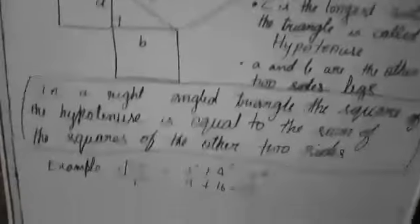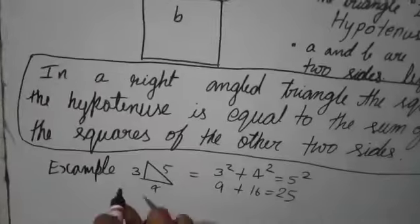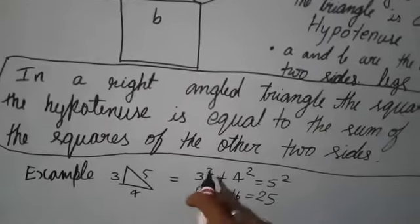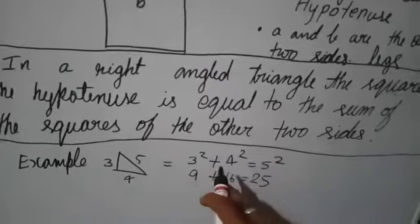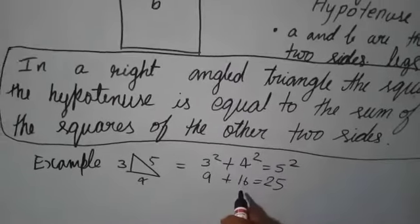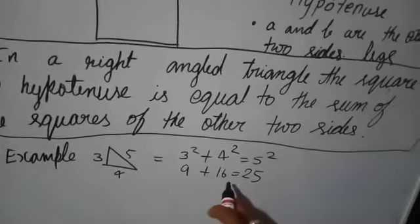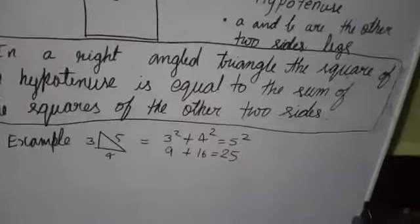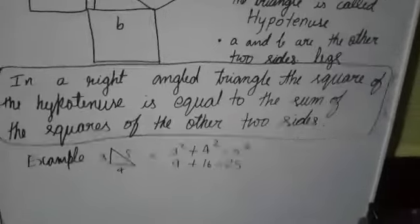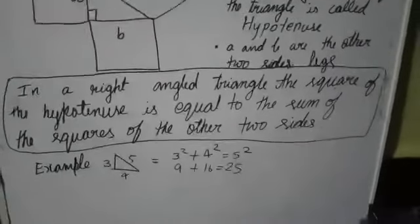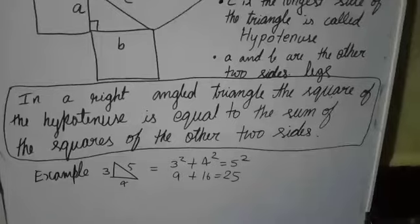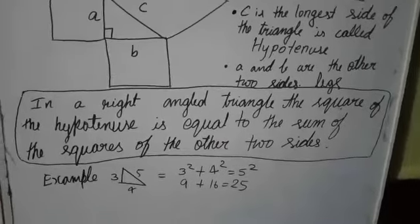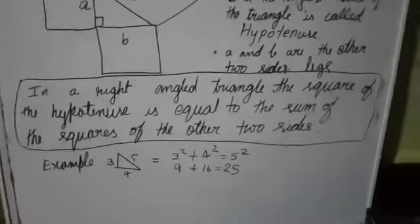For example, we can prove it: here 3 and 4 are the other two sides. If we square them — 3 squared plus 4 squared — 3 squared is 9, 4 squared is 16, and 9 plus 16 equals 25. 25 is the square of 5. So in this way the definition tells you: in a right angle triangle, the square of the hypotenuse is equal to the sum of the squares of the other two sides.